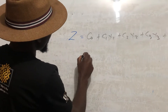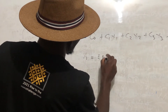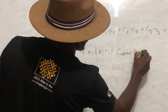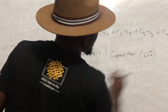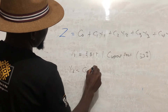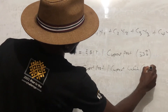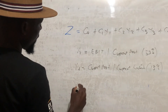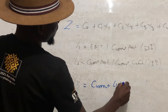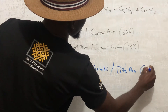X1 represents profit before interest and tax (PBIT) over current liabilities, and this should be weighted at 53 percent, meaning it contributes 53 percent to your score. X2 is equal to current assets over current liabilities, and this should contribute only 13 percent.